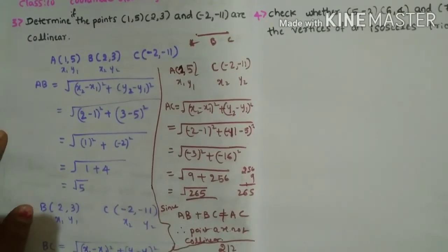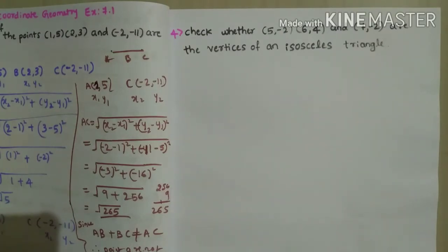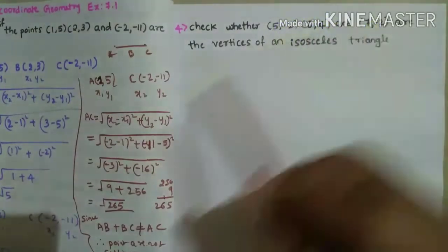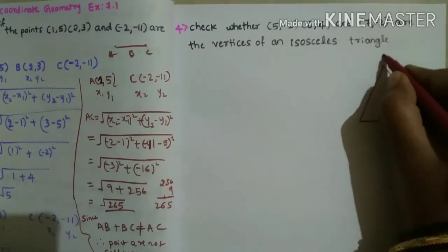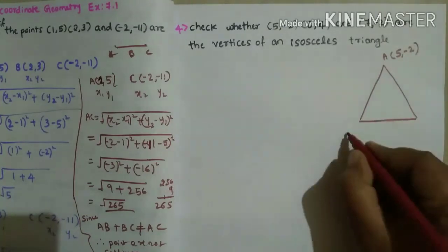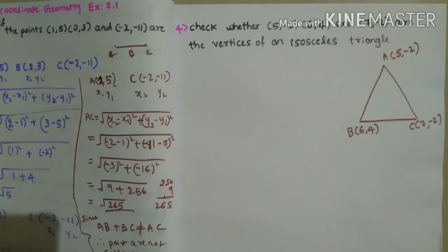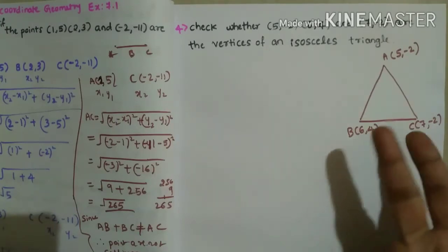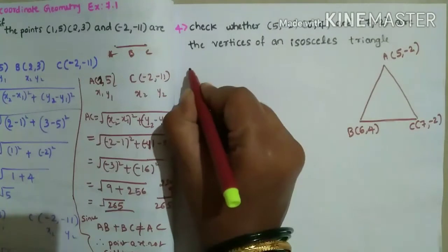Now we'll see the fourth sum. Check whether (5,-2), (6,4), and (7,-2) are the vertices of an isosceles triangle. An isosceles triangle means two sides of the triangle are equal. Take A as (5,-2), B as (6,4), and C as (7,-2). We need to find AB, BC, and AC and check if any two sides are equal.